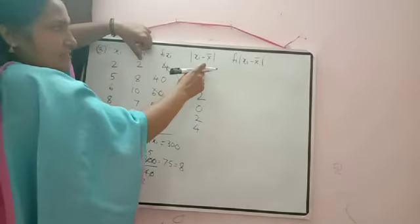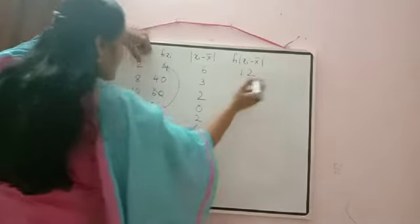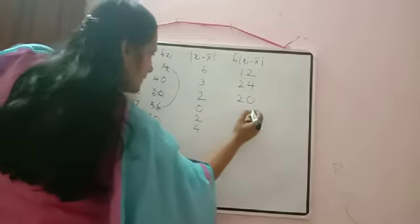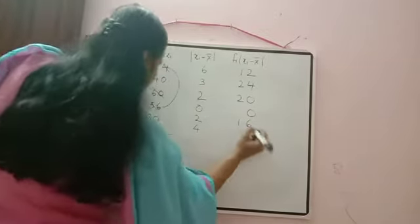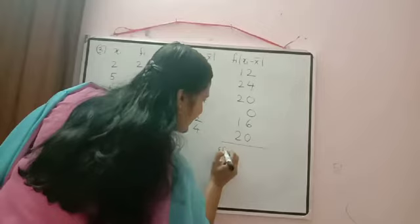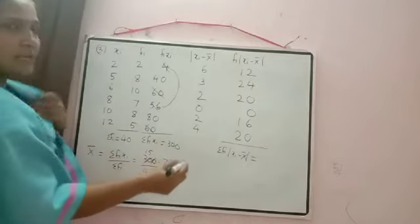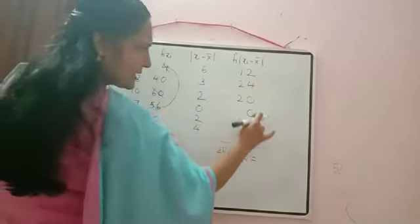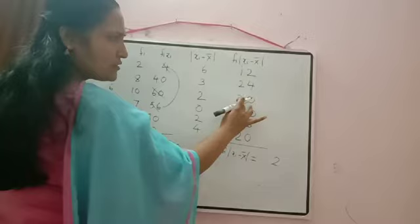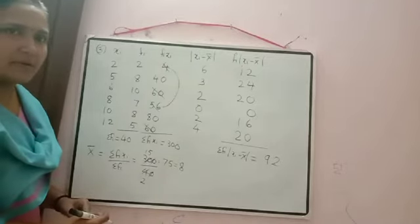Compute fᵢ × |xᵢ − x̄|: 2×6=12, 8×3=24, 10×2=20, 7×0=0, 8×2=16, 5×4=20. Now add: 4+2=6 (units), carry 1; 1+1=2, +2=4, +2=6, +1=7, +2=9 (tens). Wait, simply: 12+24=36, +20=56, +0=56, +16=72, +20=92. So Σfᵢ|xᵢ − x̄| = 92.